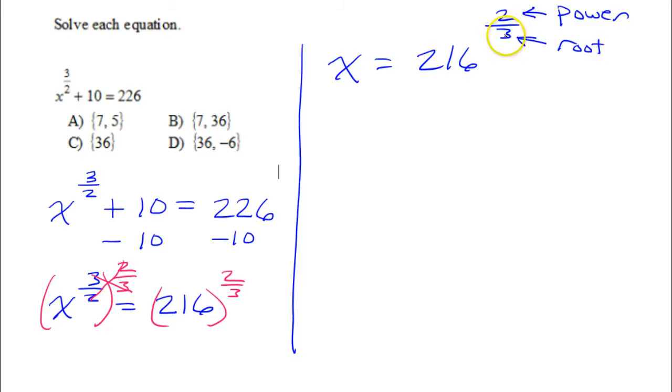So this 3 in the denominator means cube root. So that means what I really have is the cube root of 216. This 2 is an exponent. So that means this whole thing will be squared.